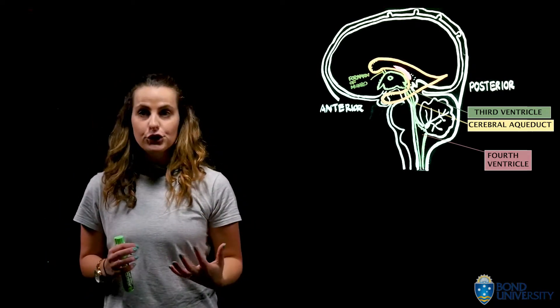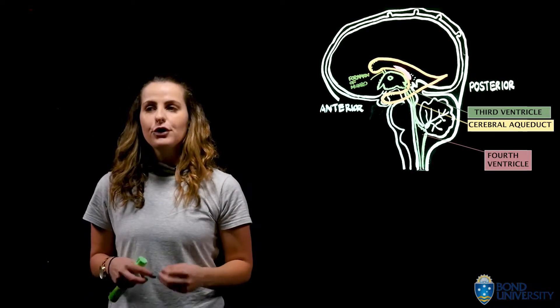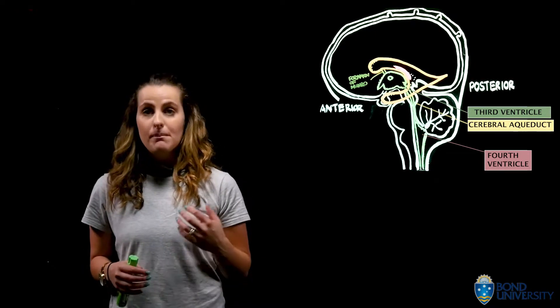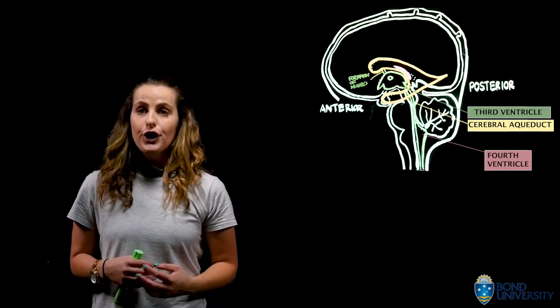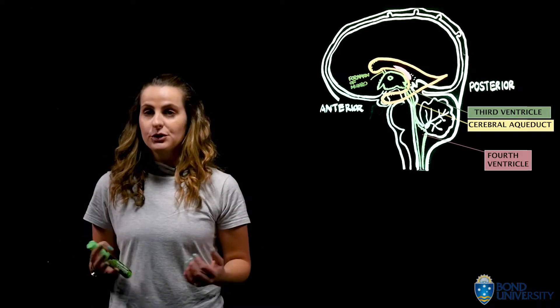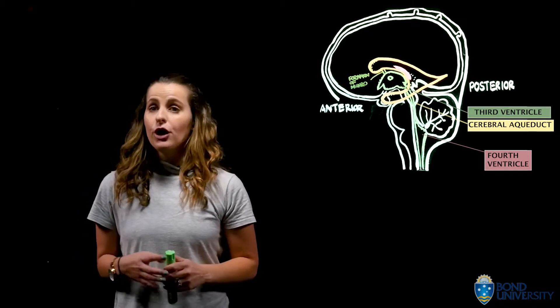Located just inferior to the fourth ventricle, we have three apertures. Firstly, within the midline, we have the median aperture, also referred to as the foramen of Magendie. And we have two lateral apertures, which are known as the foramen of Luschka.